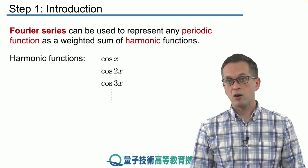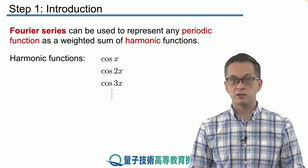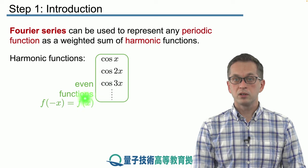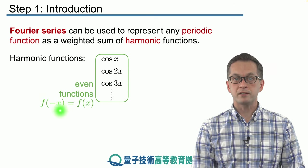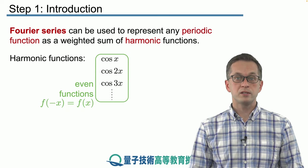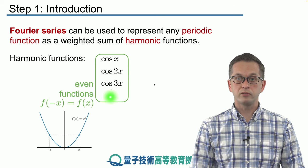And the answer is no. The reason behind that is that all of these functions, cosine x, cosine 2x, are even functions. What that means is that the value f of x is the same as f of minus x. Another simple example of an even function is just a simple quadratic, f of x equals x squared.